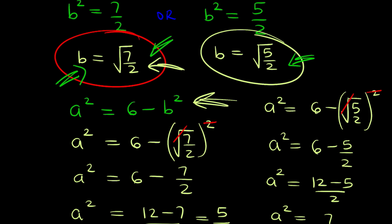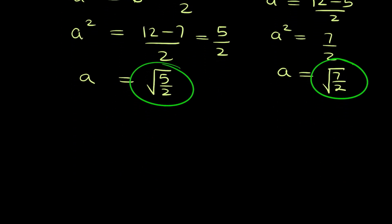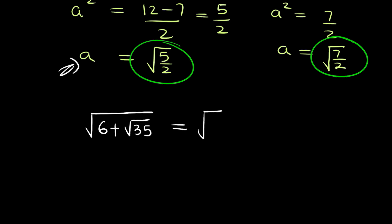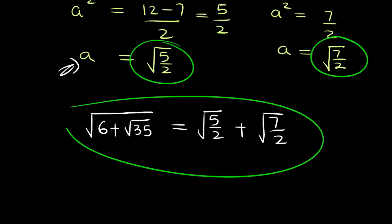So it means these two solutions are the two roots we are looking for. The square root of 6 plus root 35 — our original problem — is the sum of a and b: root 5 over 2 plus root 7 over 2. And this brings us to the end of this problem.